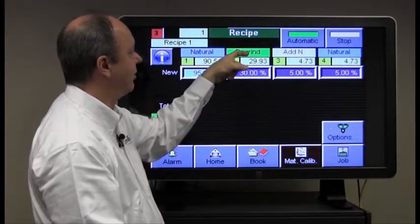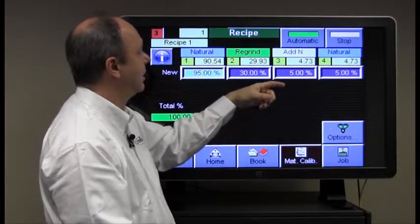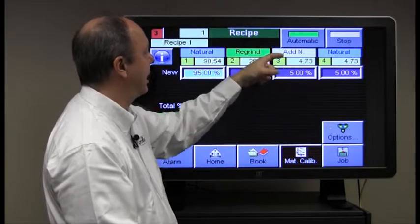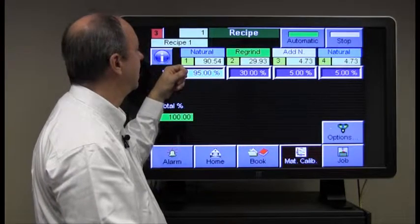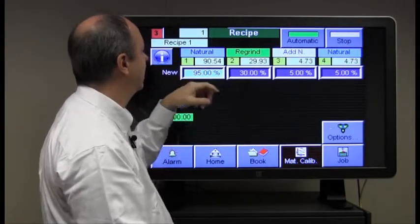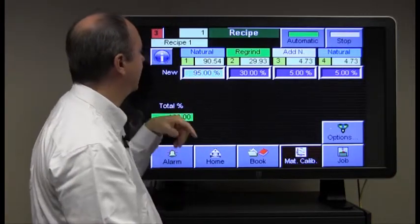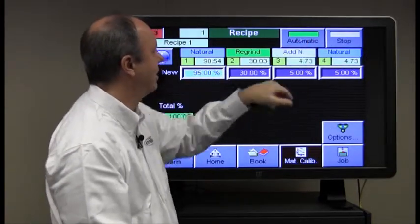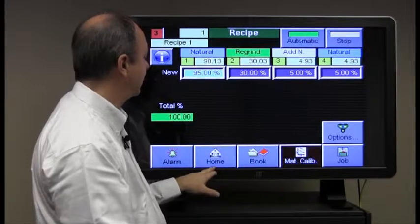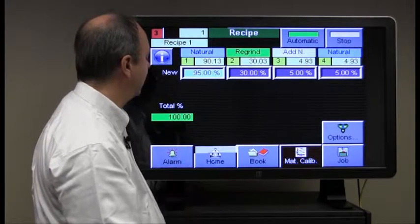Now the naturals add to 100 and what this is going to do when we execute it by pressing automatic, it's going to dose the regrind first. It's going to dose the natural next, the additive natural next and then this natural and this natural. So let's put it into automatic and we'll go back to the home screen and see what effect this has on the way the batch is made.